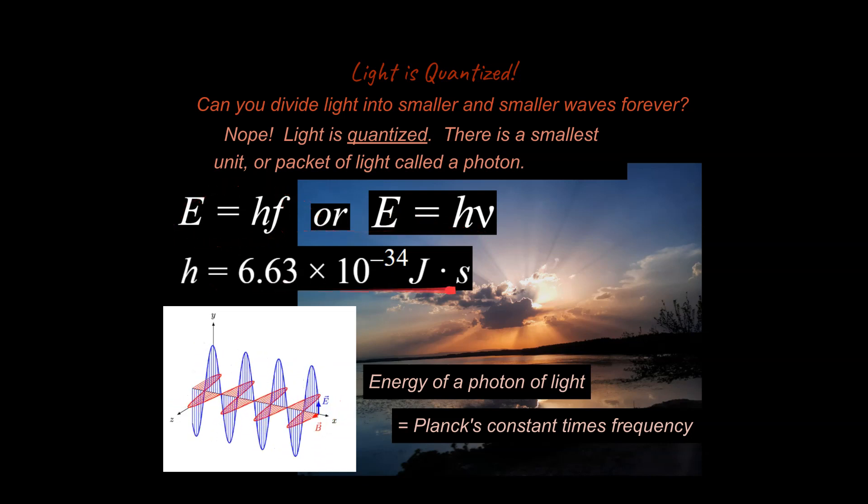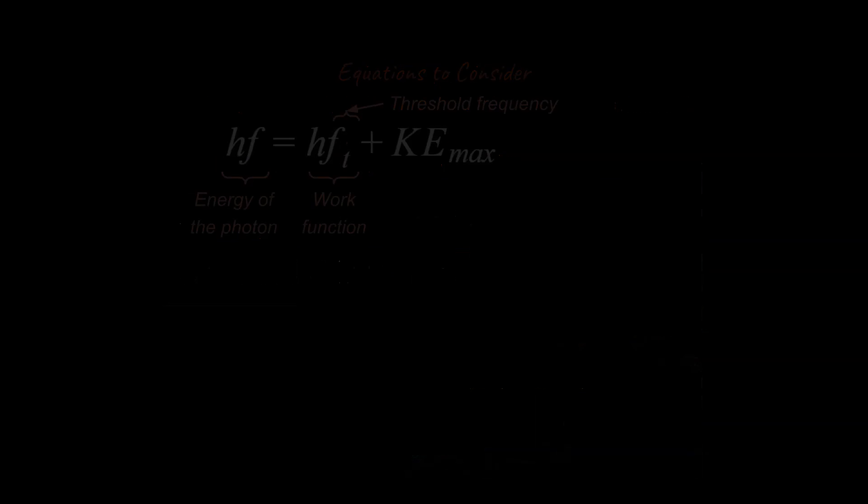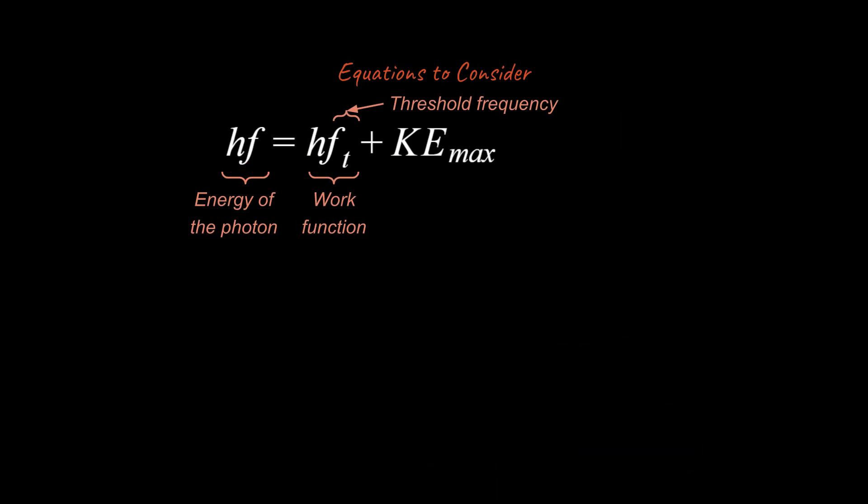This is Planck's constant right here, and so that is going to be the amount of energy. This right here is going to be the amount of energy in the photon. Alright, well if that's the case, we can work with this. We can say this is our energy of the photon. Now it takes a certain amount of work to be able to eject an electron, and that's going to be called our work function. So to free an electron from its metallic atom, it takes work.